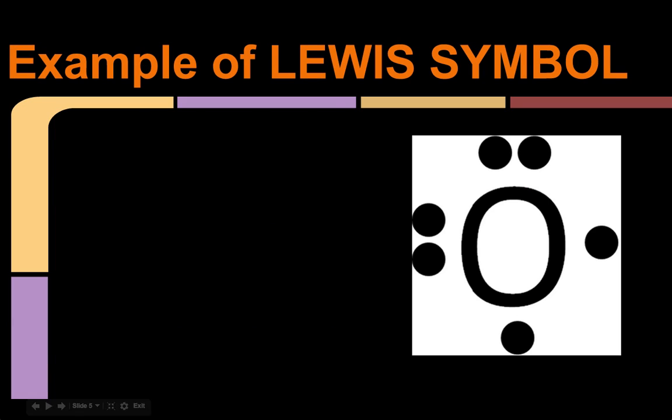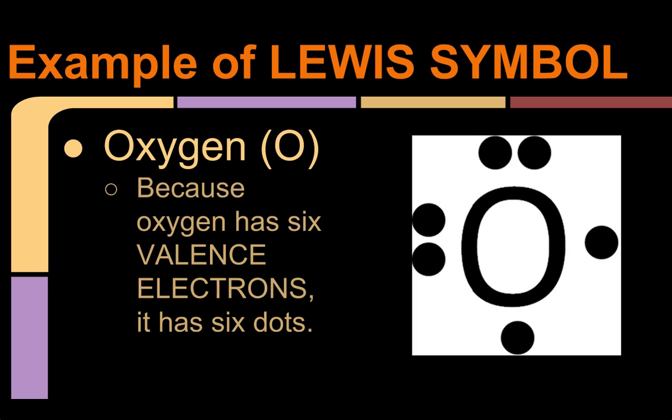Alright, so here's an example of a Lewis symbol right here, for oxygen. So you write the element symbol O, right here, and because oxygen has six valence electrons, it has six dots. And a good rule of thumb, because this will help in later units, is kind of just circle around the symbol with the dots, and never put more than two on each side. So like left, right, top, bottom, never put more than two electrons.